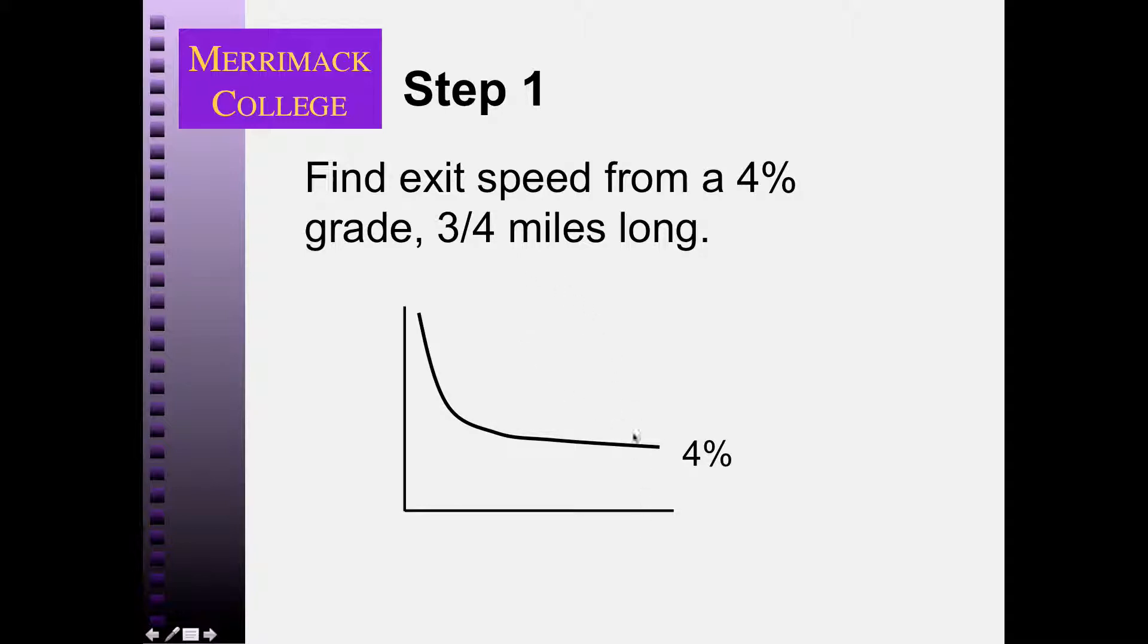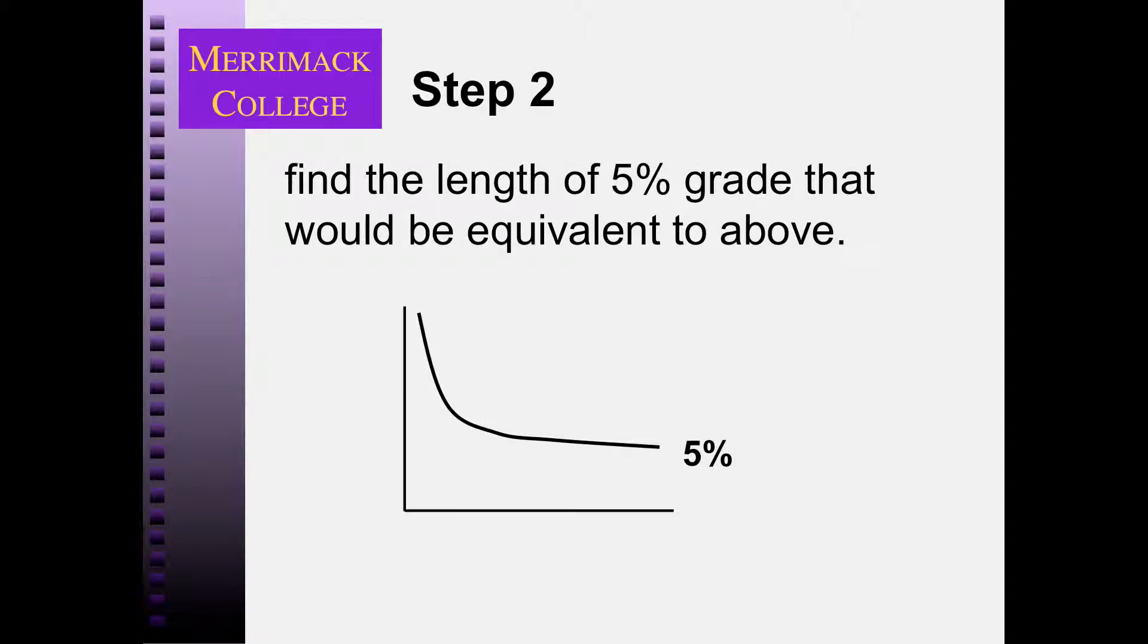So the exit speed from a 4% grade of 3,960 feet is 32.5 miles per hour. Now, what length of 5% grade would cause that exit speed?